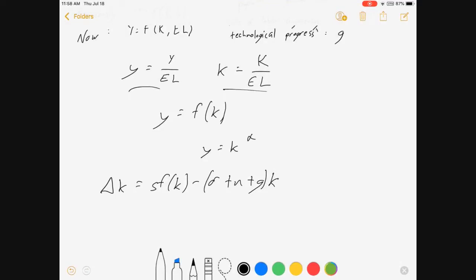Minus delta plus n plus g k. Now, keep in mind here, when I did not have population growth or efficiency growth, neither of those terms were there. It was just delta k.